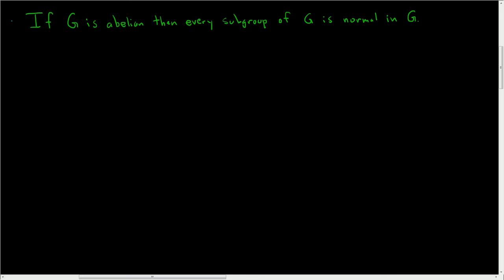If G is abelian, then every subgroup of G is normal in G. This is a pretty easy proof. Let's go ahead and do it.